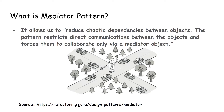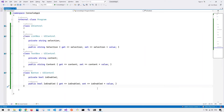Instead of having chaotic dependencies inside each object, what we can do is get all these objects — like these cars here, they're all objects — to communicate with only one single object, called the mediator. This mediator receives signals from these objects and directs, controls, or mediates what to do.